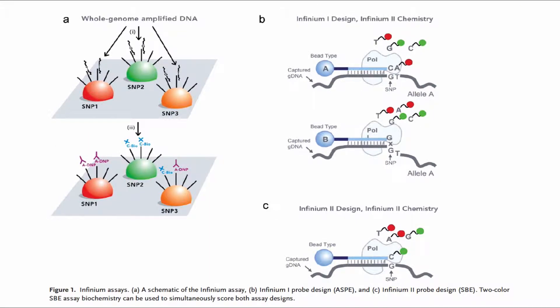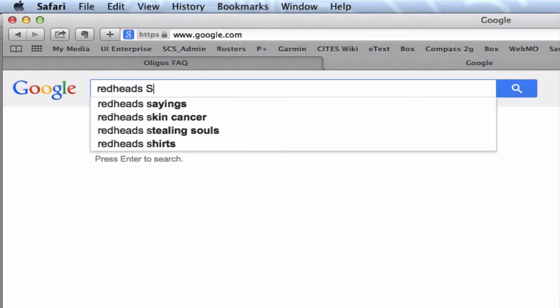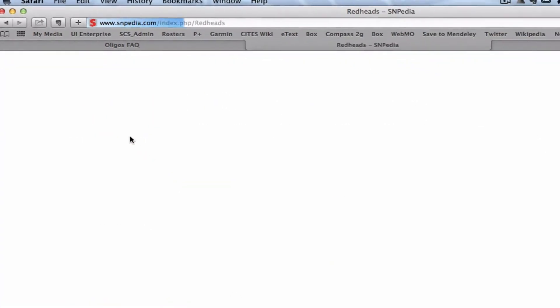In particular, we're going to take a look at the single-base extension method. That's Part C of this particular figure. So let's start with an example. And to begin, let's think about SNPs that are associated with redheads.